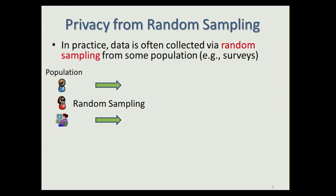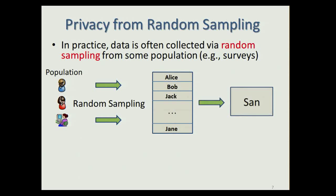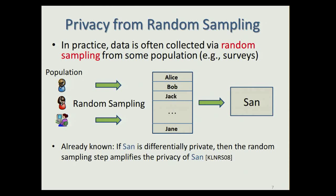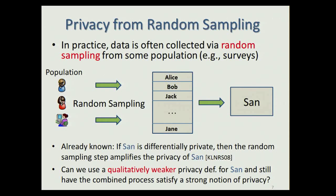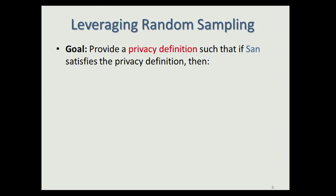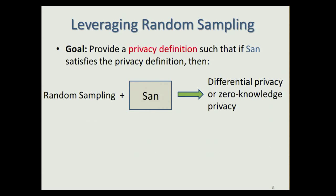We observe that in practice, data is often collected via random sampling from some population, such as in surveys, and this collected data is stored in a database. Next, some sanitization mechanism SAN is run on the database. It is already known that if SAN is differentially private, then the random sampling step amplifies the privacy. However, we can ask: can we use a qualitatively weaker privacy definition for SAN and still have the combined process satisfy a strong privacy notion? The goal is to provide a privacy definition such that if SAN satisfies it, then combining SAN with a random sampling step yields a process satisfying differential privacy or zero-knowledge privacy.